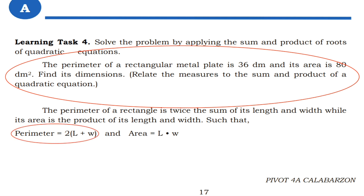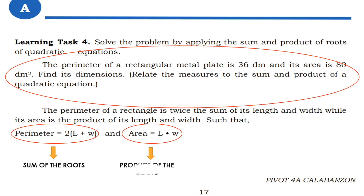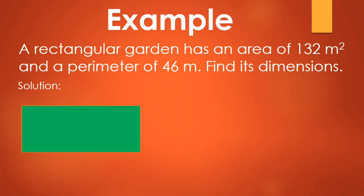The perimeter is equal to 2 times the quantity (l plus w). So perimeter will serve as our sum of the roots, and area will serve as the product of the roots. An example: a rectangular garden has an area of 132 square meters and a perimeter of 46 meters. Find its dimensions.